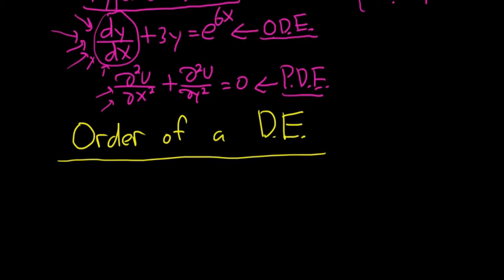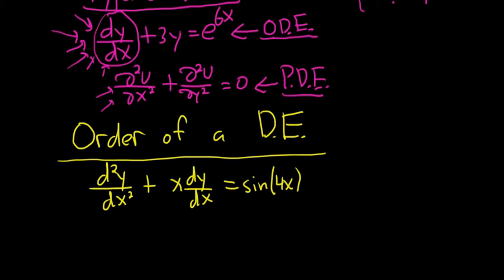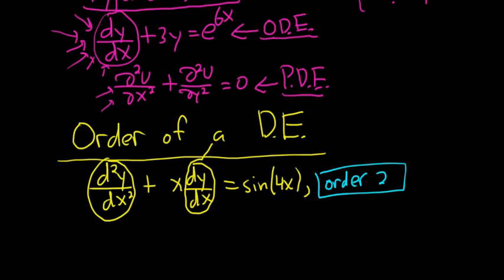For example, say we had d²y/dx² plus x dy/dx equals sine of 4x. This is an ordinary differential equation with only ordinary derivatives. This is the first derivative here, and this is the second derivative here. So in this case, the order is 2 because the highest derivative is of order 2.